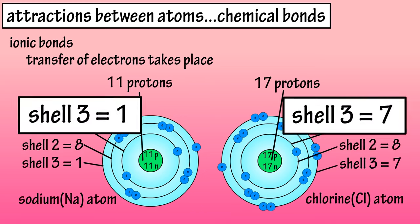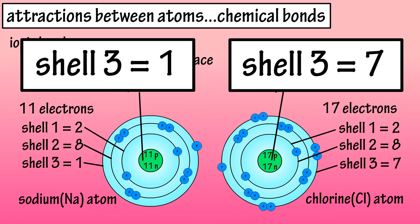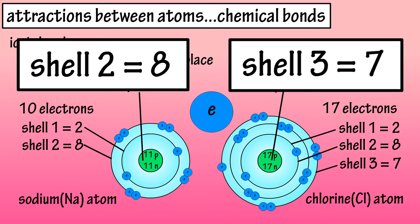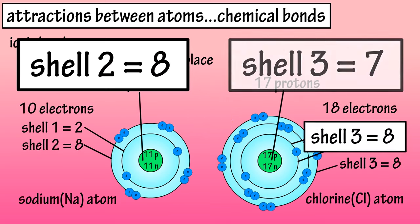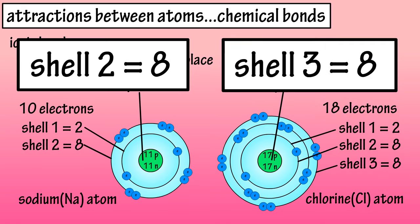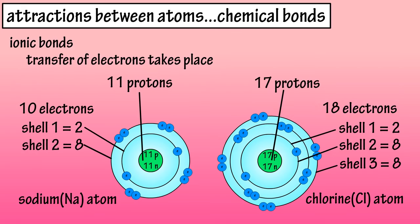We know that atoms want to have 8 electrons in their outer shell. So, sodium can give up 1 electron, and now it has 8 electrons in its outer shell, and chlorine can take that electron from sodium, and that will give it 8 electrons in its outer shell.